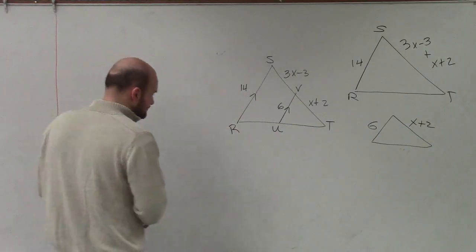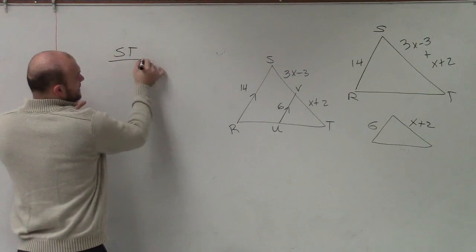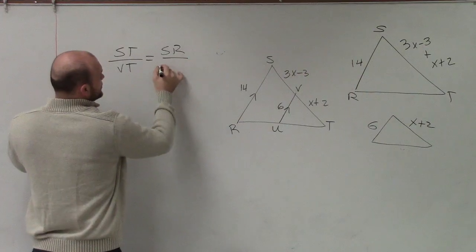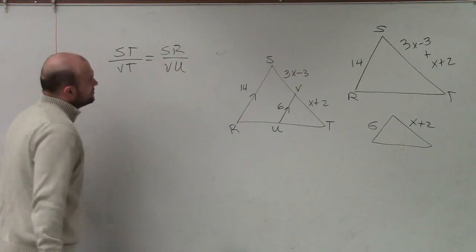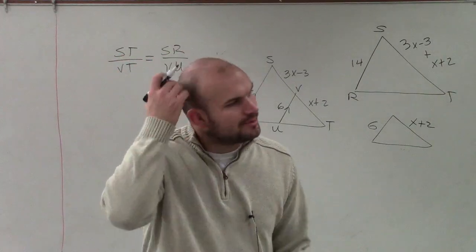So what I can say then is I can say ST is to VT is equal to SR is to VU. Their side lengths are going to be proportional to each other.